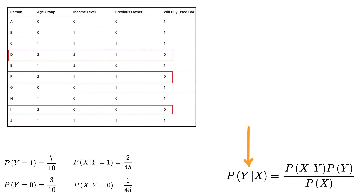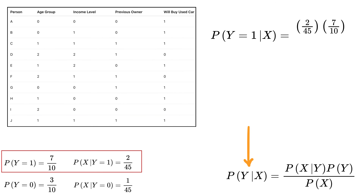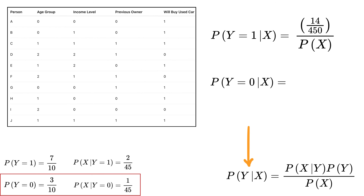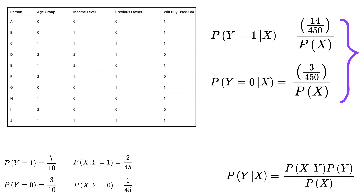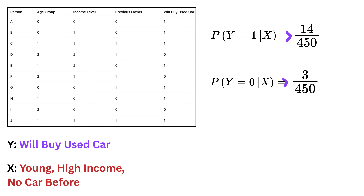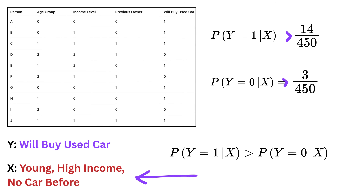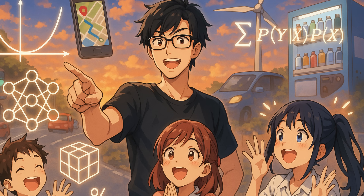Now we calculate the final value using Bayes' theorem. For Y = 1, we get P of X given Y = 1 times P of Y = 1, over P of X. For Y = 0, we get P of X given Y = 0 times P of Y = 0, over P of X. Since P of X is common in the denominator for both, we can remove it when comparing. Since the probability for Y = 1 is far greater than for Y = 0, the Naive Bayes classifier predicts that a person who is young, has high income, and has no previous car ownership is likely to buy a used car. Using Bayes' theorem and probability, we've learned how companies can predict whether a customer is likely to buy a used car based on their personal features — this kind of math is happening all around us every day, making data-driven decisions in real-life businesses.